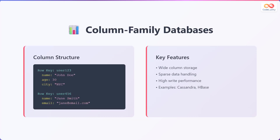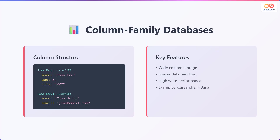Now let's discuss column family databases. These databases organize data into columns rather than rows. For example, with the row key user 123, the name column contains John Doe, the age column is 30, and the city column is New York City. For the row key user 456, the name column contains Jane Smith, and the email column contains jane@email.com. Key features include wide column storage allowing for a large number of columns, sparse data handling efficiently storing data with many missing values, and high write performance making them suitable for write-heavy applications. Examples include Cassandra and HBase.